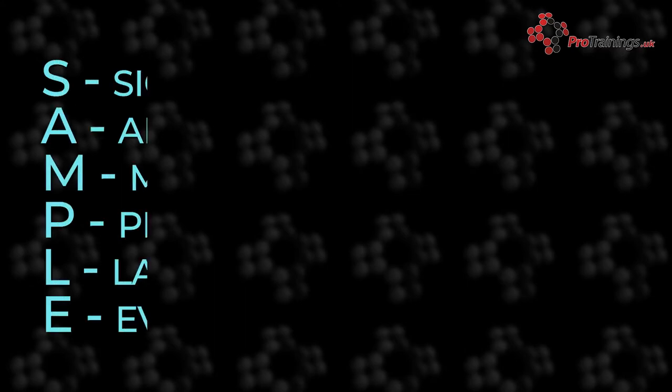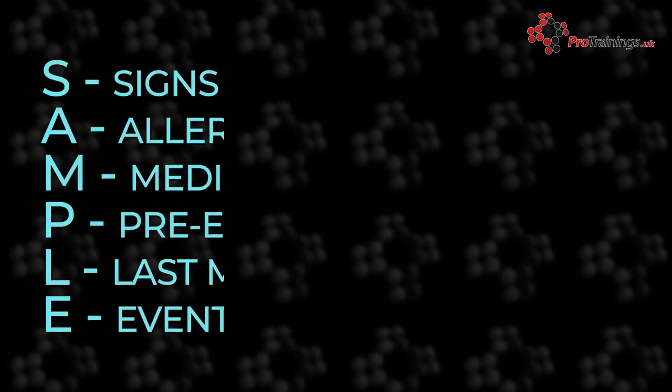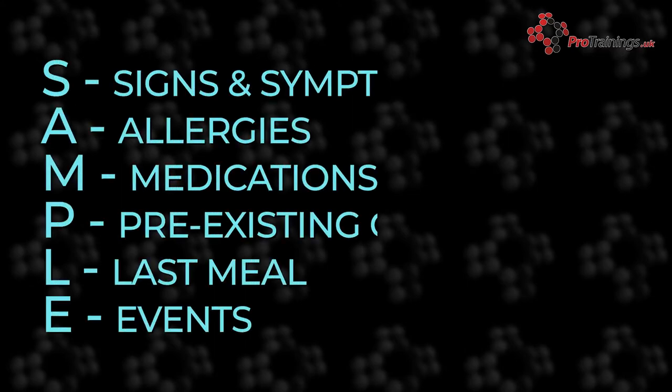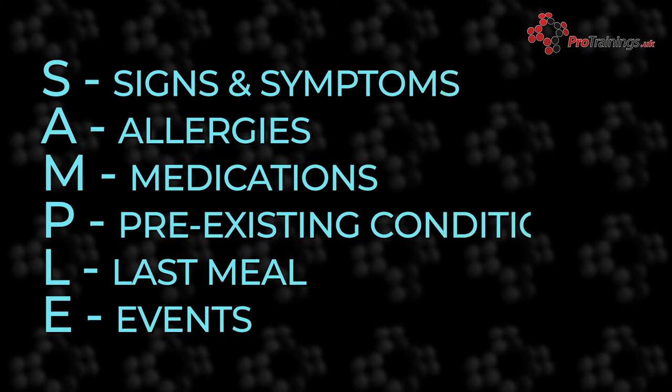With the mnemonic SAMPLE: S stands for signs and symptoms, A for allergies, M for medications, P for pre-existing medical conditions, L for last meal, and E for events. We use the mnemonic SAMPLE as a way of assessing somebody who is unwell. With this information, we can decide on what action we need to take, as it gives us more information to tell the EMS or other people like family members.